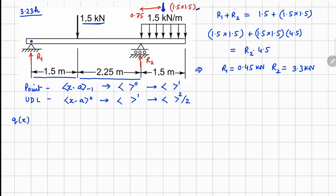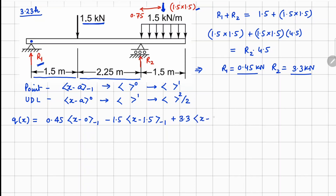Let's write down the intensity function Q(x), starting from the left. R1 = 0.45, so: 0.45⟨x − 0⟩⁻¹ for the point force, then minus 1.5 for the applied point load, then plus 3.3⟨x − 3.75⟩⁻¹ for R2 at location 3.75. Then we have the UDL, which we extend beyond the beam, written as minus 1.5⟨x − 3.75⟩⁰.